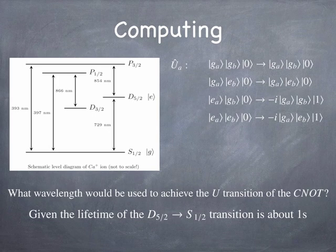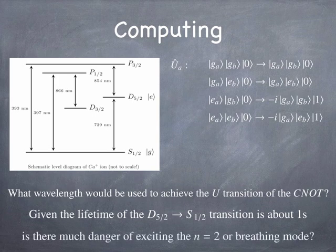So that turns out to relate to the width of the transition, the width of that resonance. Is there very much danger of exciting the N equals 2 mode or the breathing mode of the oscillator, of the translational motion of the ions in the cavity? And so that's enough questions. I don't think we'll probably even get through all of them tomorrow. But that gives you a sense of the kinds of questions I want you to think about and the things I want you to be able to do, both on the homework and on the exam.